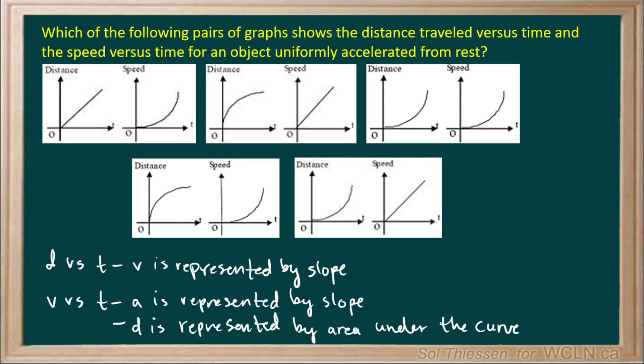Which of the following pairs of graphs shows the distance traveled versus time and the speed versus time for an object uniformly accelerated from rest? Remember that on a distance versus time graph, speed is represented by slope, and on a speed versus time graph, the magnitude of acceleration is represented by slope, and distance is represented by area under the curve.